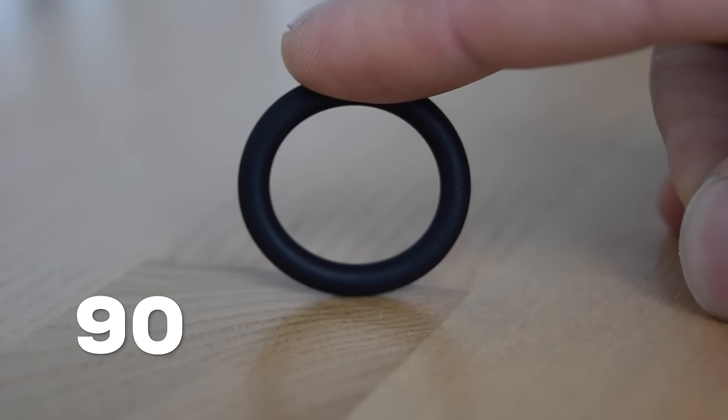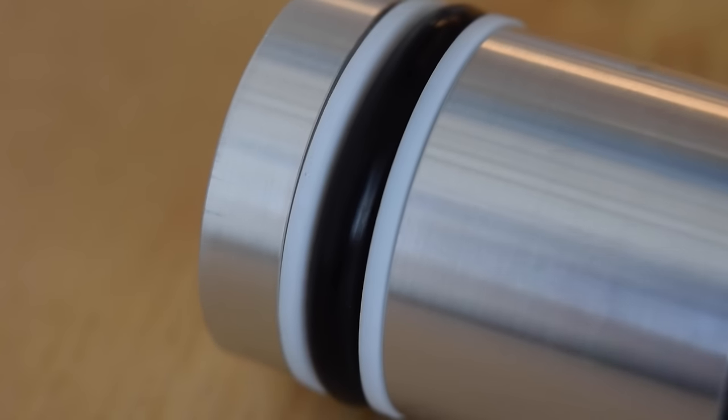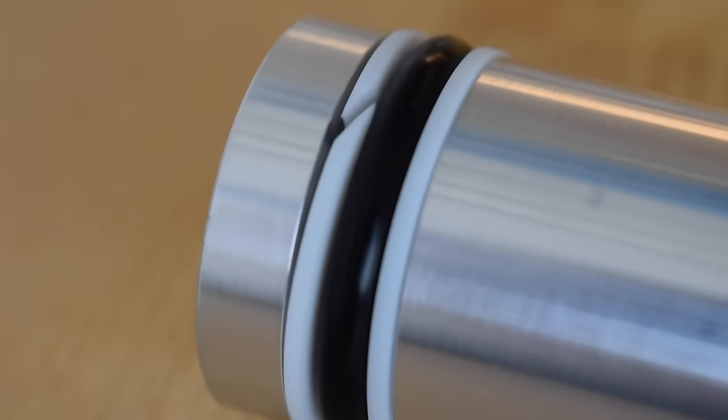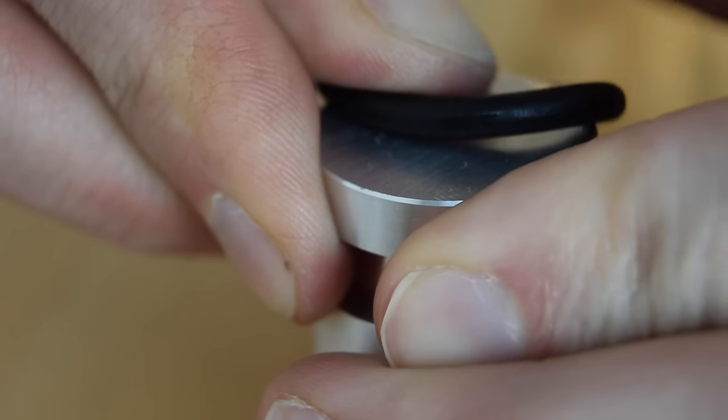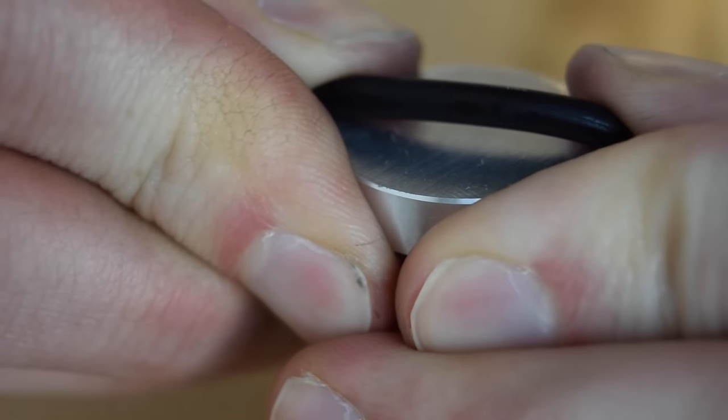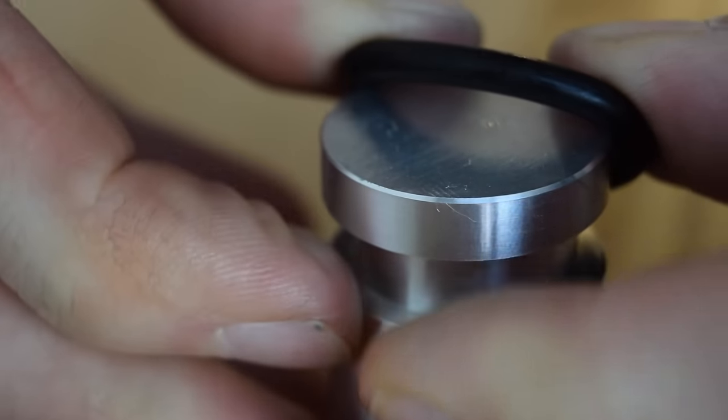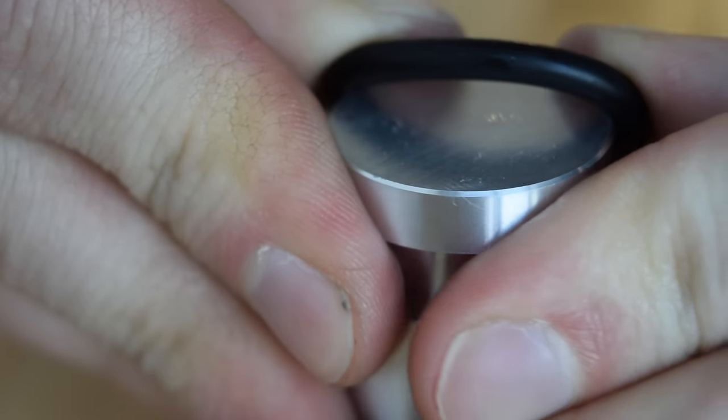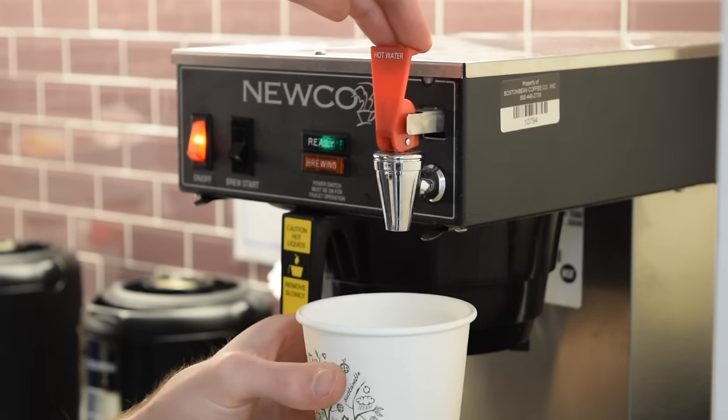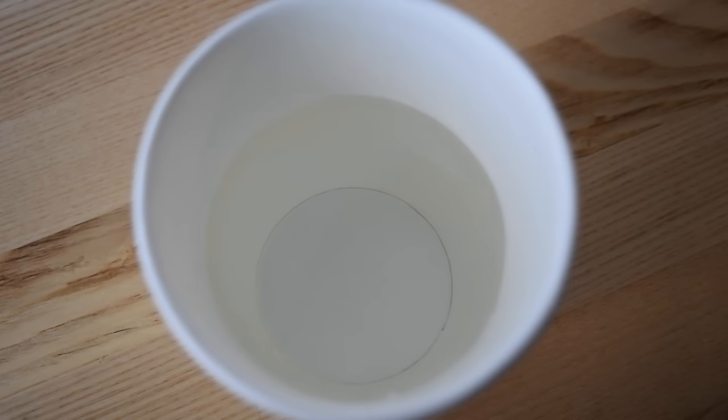90 durometer is extremely hard and consequently is more resistant to extrusion. For higher pressures exceeding maybe 6000 psi, you'll definitely want to consider using 90 durometer. However, the better high pressure performance comes at a price. 90 durometer O-rings can be really difficult to install, particularly in small sizes. A good tip is to drop them in hot water for a few minutes to let them soften. They will be a bit easier to install.